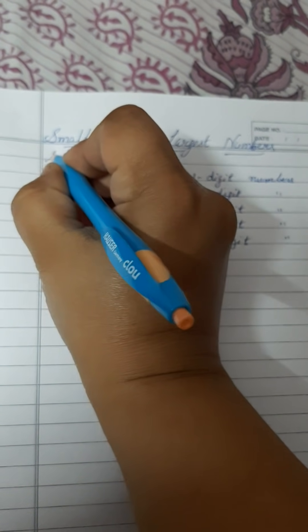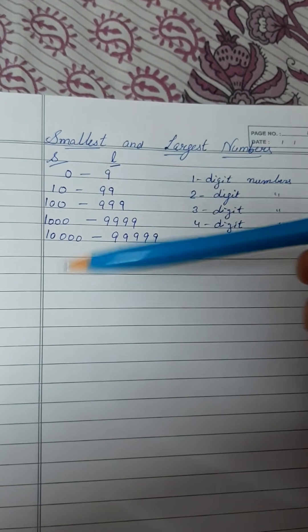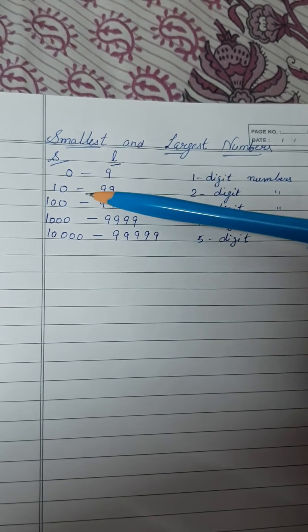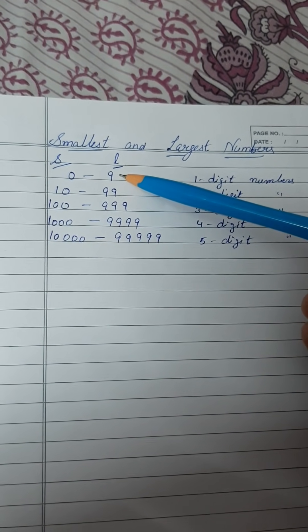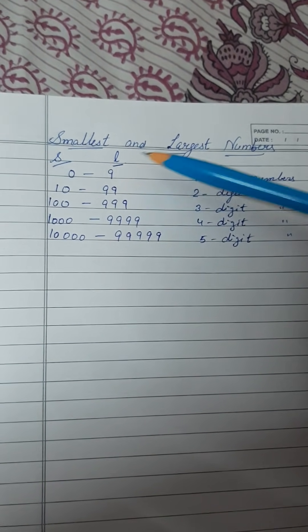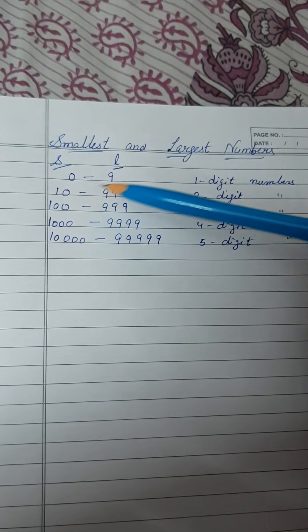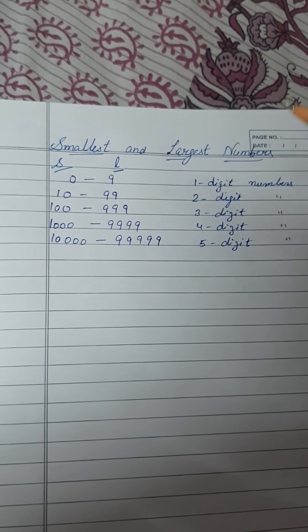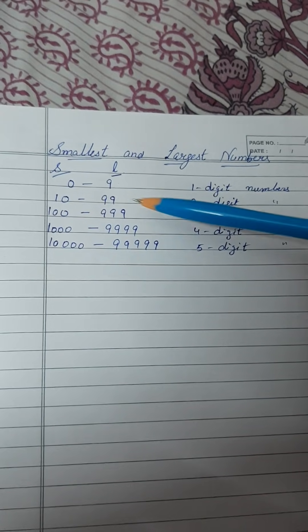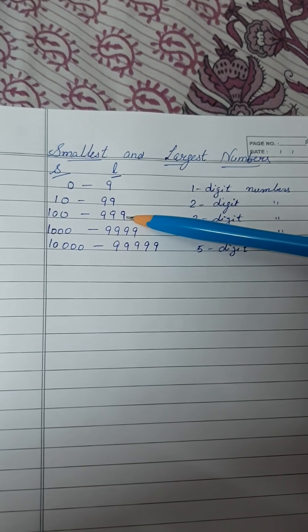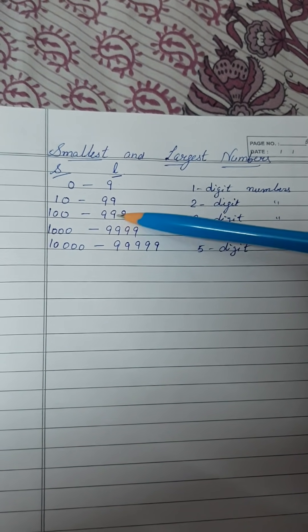99 is the largest two digit number. In 3 digit numbers, 100 is the smallest (सबसे छोटा) and the largest number is 999.